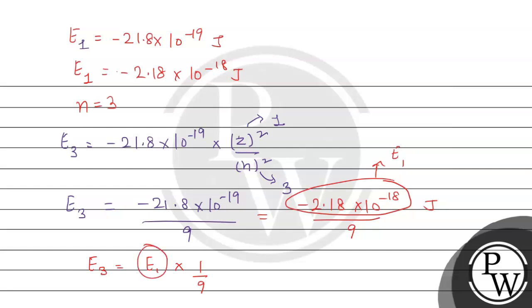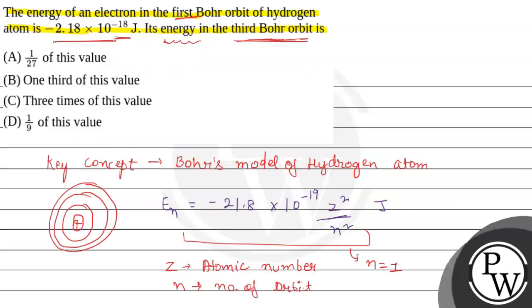From the given options, option D is correct, which is 1/9 of this value. Let us mark option D as the final answer. Options A, B, and C are incorrect. Hope you understood it well. Best of luck!